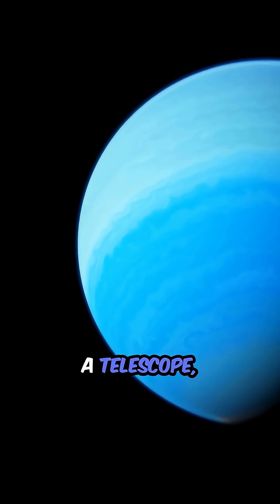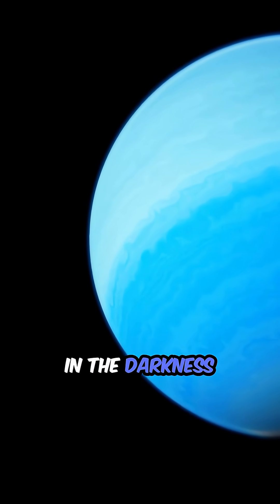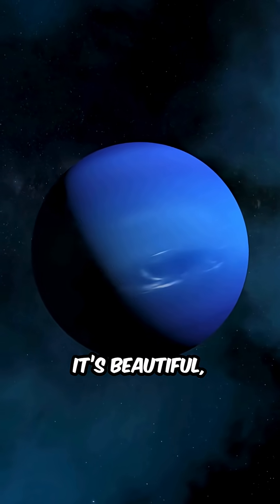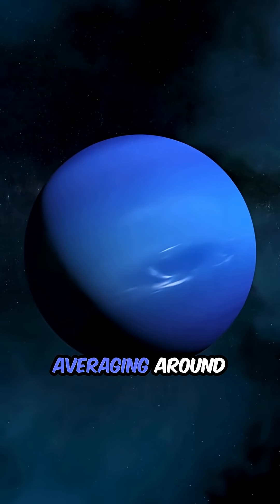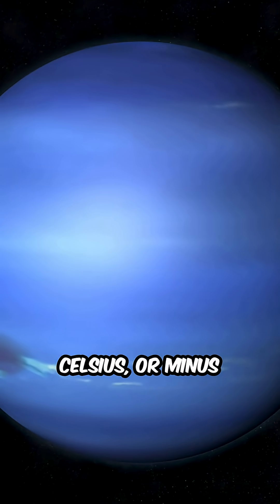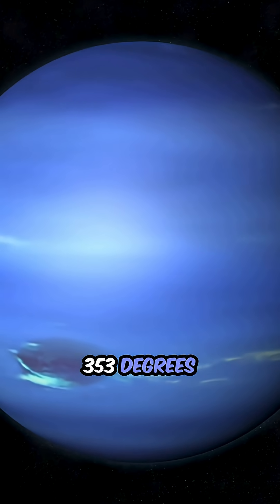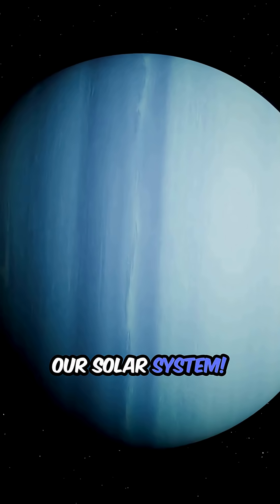If you were to look at it through a telescope, you'd see a brilliant azure sphere floating in the darkness of space. It's beautiful, but it's also incredibly cold, averaging around minus 214 degrees Celsius, or minus 353 degrees Fahrenheit. That's colder than any other planet in our solar system.